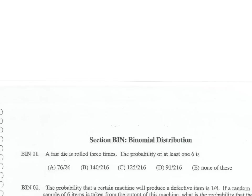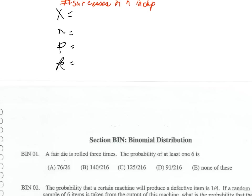Once we've identified that our problem involves a binomial random variable, all we need to do is identify what x, n, p, and k are so that we can apply our binomial formula. x is the number of successes in n independent trials.